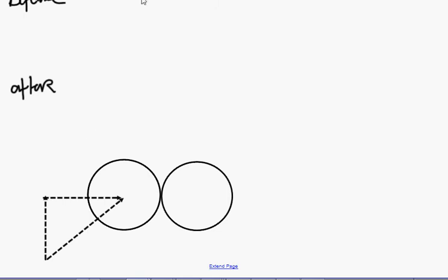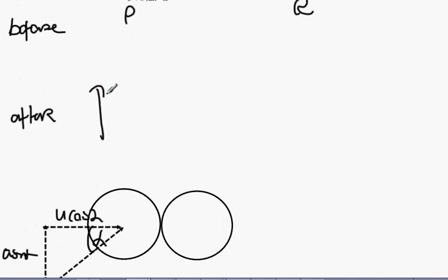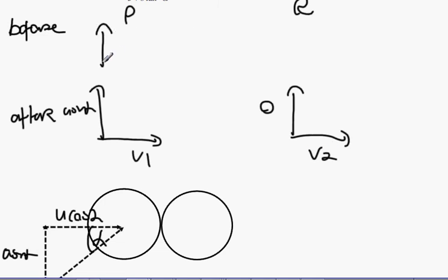Particle P is going in at alpha and its velocity is U. So it's going to be U cos alpha going across and U sine alpha going up. After collision it's going to be U sine alpha, that's unaffected, and then we're going to call that V1. After collision for Q it's going to be 0 and V2. Before collision for P it's U cos alpha and U sine alpha, and the other one has no speed at the start.